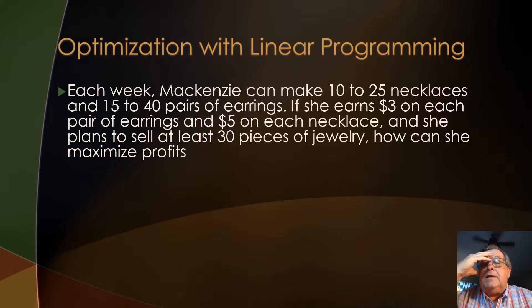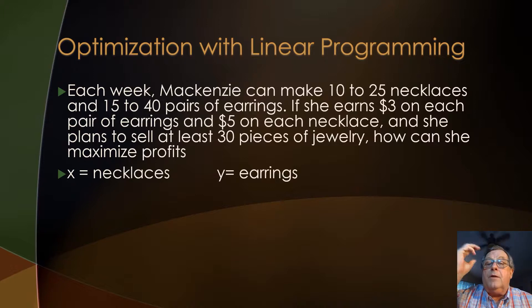All right, so she's making necklaces and earrings. Let's first set some variables. Let's say that x equals the necklaces and y equals the earrings. Now, we're told that she can make between 10 to 25, somewhere between 10 and 25 necklaces. And so we'll say that then 10 is less than or equal to x, and x is less than or equal to 25.